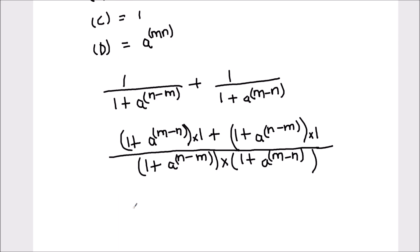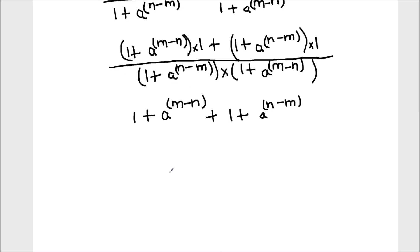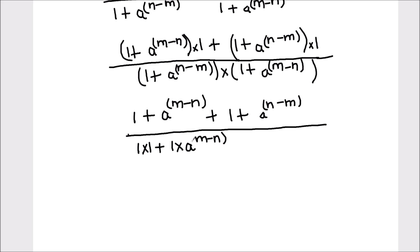Now we will distribute and open the brackets. So that's (1 plus a raised to power m minus n) plus (1 plus a raised to power n minus m), whole divided by (1 plus a raised to power n minus m) times (1 plus a raised to power m minus n). Expanding, that's 1 times 1 plus 1 times a raised to power n minus m.